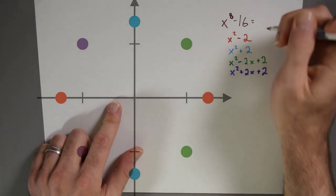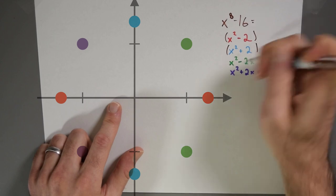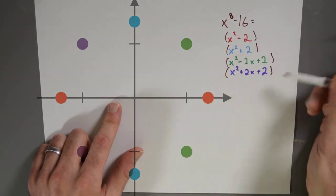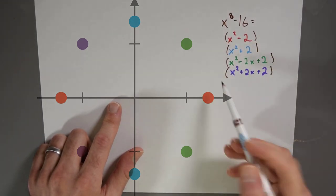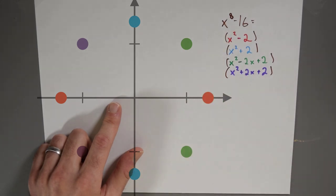And indeed, if I multiply together these four polynomials, I get the polynomial x to the 8th minus 16. So I've factored x to the 8th minus 16.